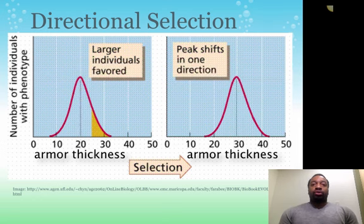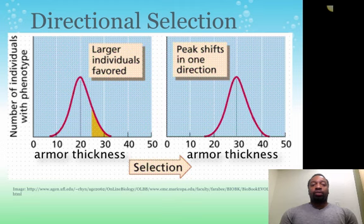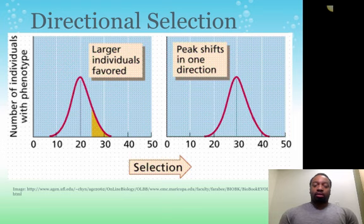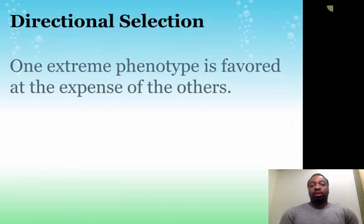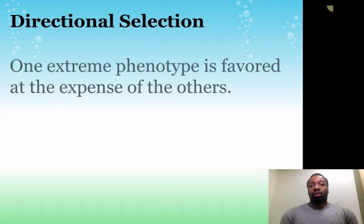This is what we call directional selection — a type of natural selection where one extreme phenotype is being favored at the expense of the other phenotypes. Some assumptions we make here: the trait is inherited, thicker armor is favored in this particular environment, and there's a range of variation in the phenotype. All the standard assumptions of natural selection apply.